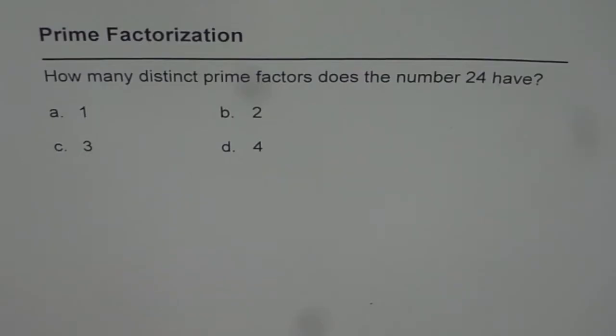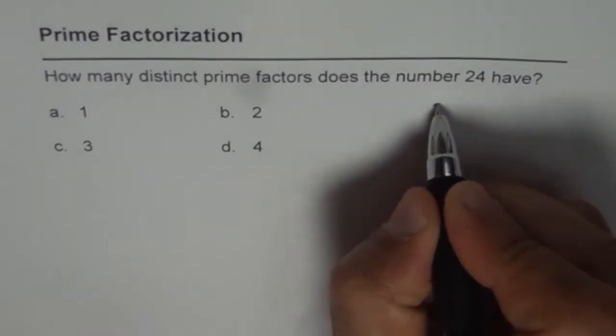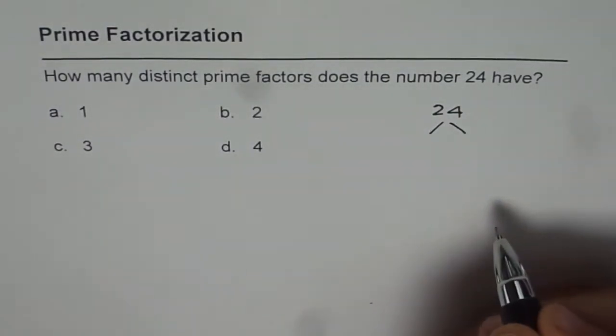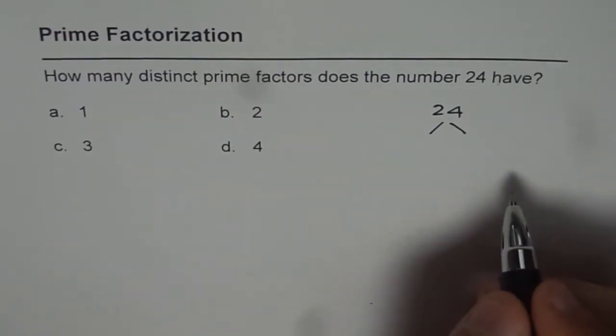Now to answer these questions it is better to do prime factorization. So let's start with the number 24. Prime factorization means to find the factors and it ends when we have all the prime factors.